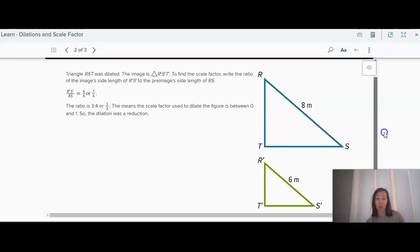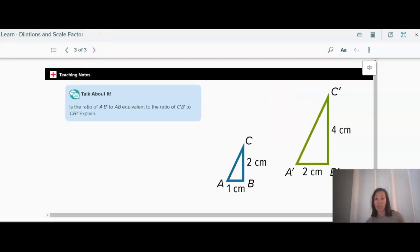So this triangle here, RST is dilated. This case, this is the pre-image, and this is the image. So the image is smaller. So our scale factor, if it gets smaller, then our scale factor is going to be between zero and one. It'll be a fraction. So this one was actually a reduction. It was not enlarged.